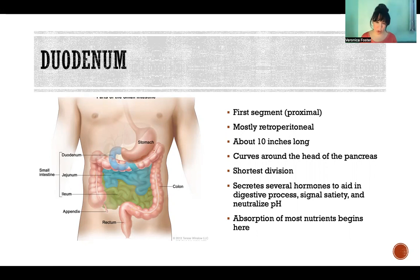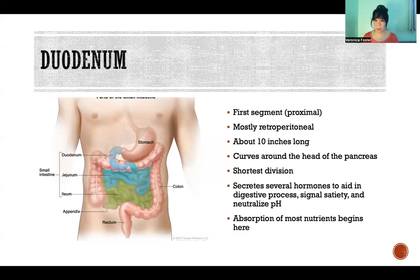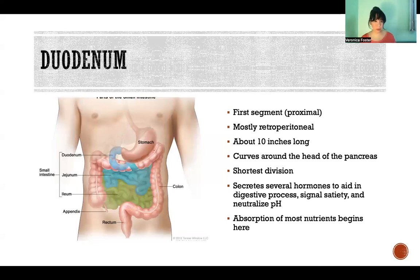The duodenum secretes lots of different hormones that are part of digestion. They help to stimulate secretions from the liver, gallbladder, and pancreas. They also signal the hypothalamus to say that we're full, and signal the stomach to slow down gastric emptying so that the duodenum can cope with all the food being emptied. They also help stimulate secretions from other organs that are important for neutralizing the extremely acidic pH of the chyme that is being emptied from the stomach into the duodenum.